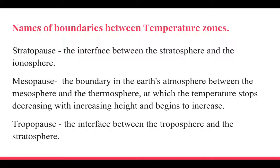Mesopause - the boundary in the Earth's atmosphere between the mesosphere and the thermosphere at which the temperature stops decreasing with increasing height and begins to increase.